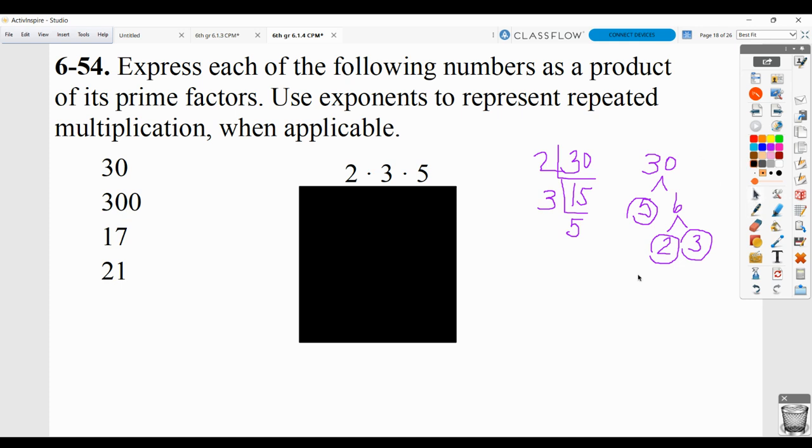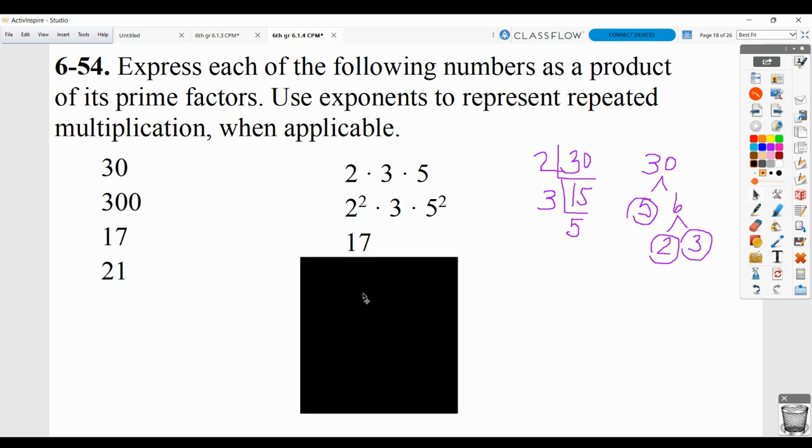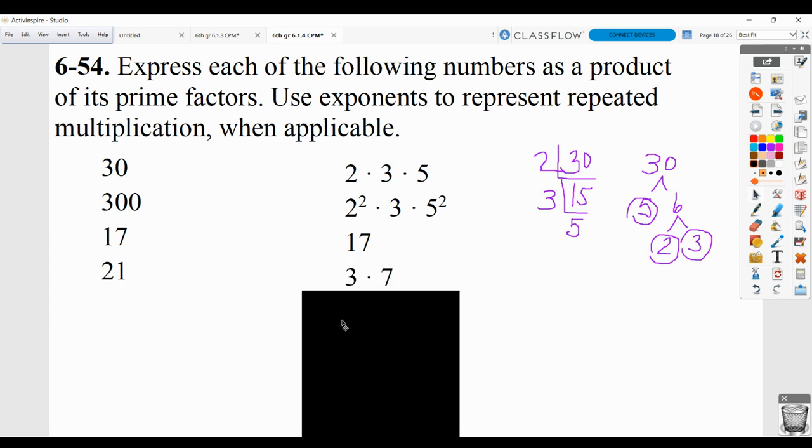For the other ones, again, make sure you're showing your work. But, like for 300, there ends up being 2 times 2 times 3 times 5 times 5, which is the same as 2 to the second power times 3 times 5 to the second power. 17 is a prime number. It cannot be broken down any further, so it just stays 17. And, 21 is just 3 times 7.